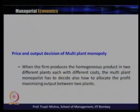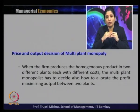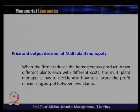When the firm produces a homogenous product in two different plants, each with a different cost function, the multi-plant monopolist must decide how to allocate the profit-maximizing output between the two plants. The product is identical across all plants, but each plant has a different cost function and operates at a different level of cost, implying that the per-unit cost differs across plants.